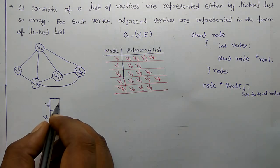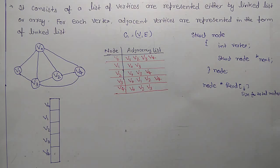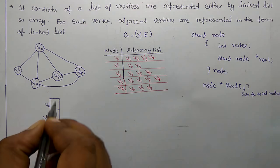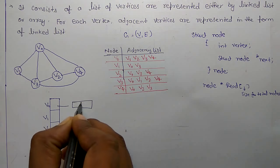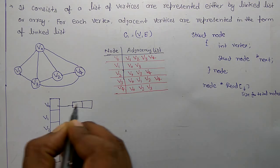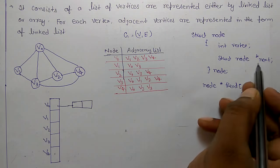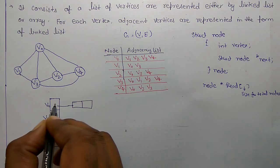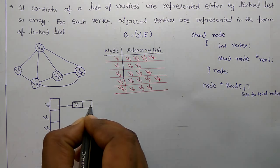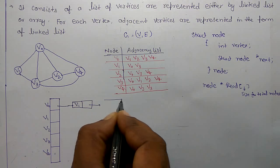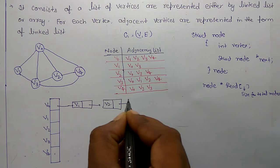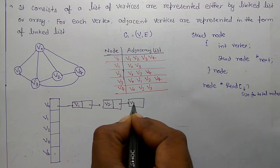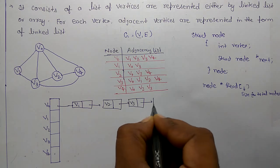V0 will be connected to a linked list which has a vertex and next pointer. Vertex of V0 is connected to V1, and its next pointer is connected to V2, and its next is connected to V3, and next connected to V4.